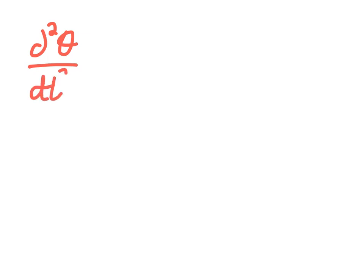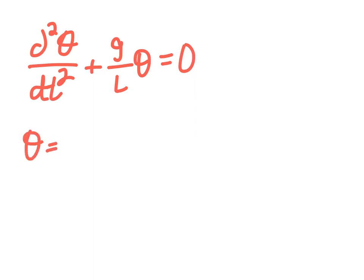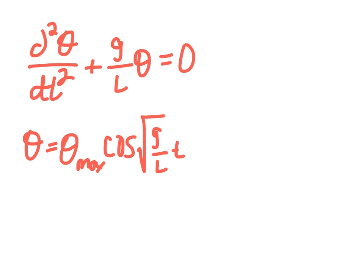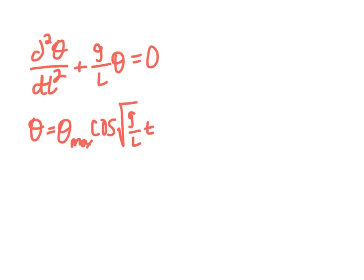For the simple pendulum, the differential equation is: d²θ/dt² + (g/l)θ = 0. The solution to this equation is θ = θ_max times cosine(√(g/l) · t).